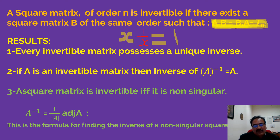If A is an invertible matrix, then the inverse of A inverse is A itself. That is, (A⁻¹)⁻¹ = A. We already know A inverse, and if we take the inverse of A inverse once again, we get back A.